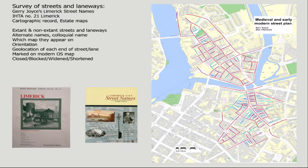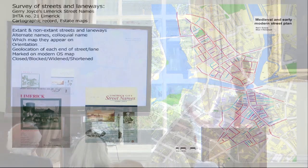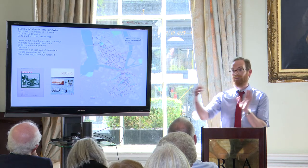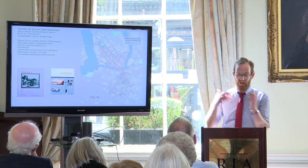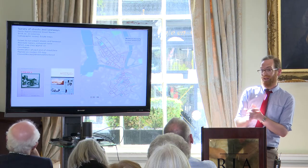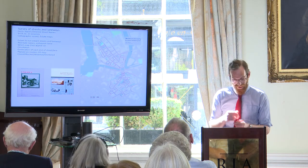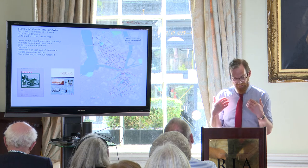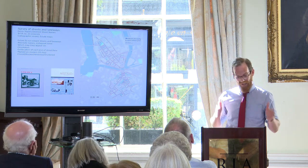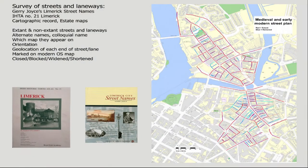Streets can be widened, losing a plot from one side; streets can be shortened; street names can move. In Limerick over the period of the late 18th century, there were three Pump Lanes all next to each other. There are also colloquial names, names that no longer exist, lanes that are closed, and lanes that are bows.